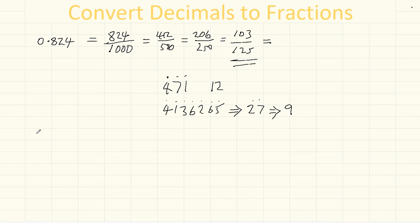Okay, on with the examples. How about 0.012? Well, again, this column is the thousandth column. So we've got 12 over 1,000 equals 6 over 500 equals 3 over 250, and that's our answer.